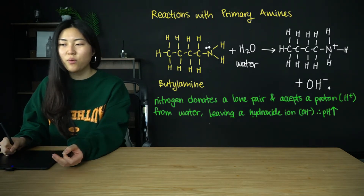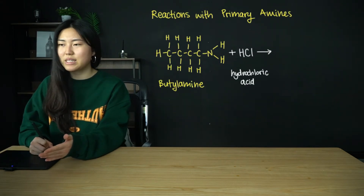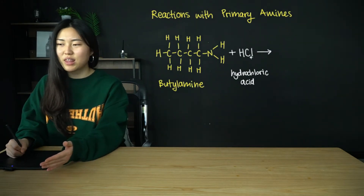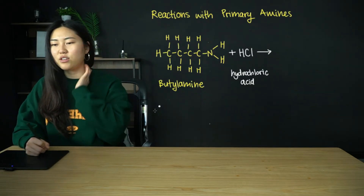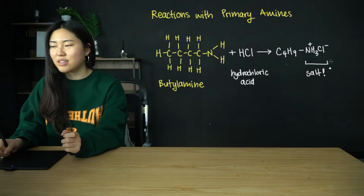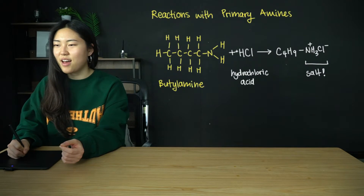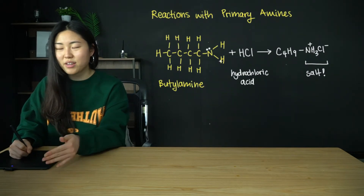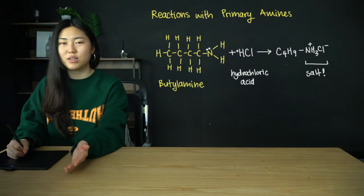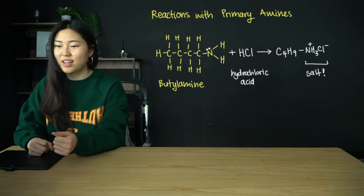So we know that primary amines are basic. Because they are basic, we're going to react butylamine with hydrochloric acid to see if a neutralization reaction occurs. We get a salt — the lone pair on the nitrogen is donated to get the H+ and that forms the chloride ion, giving ionic bonding and therefore a salt.